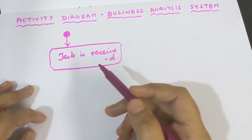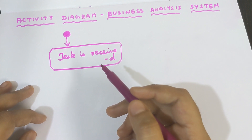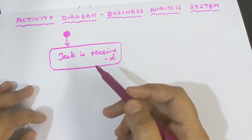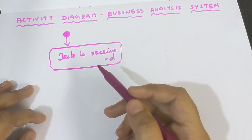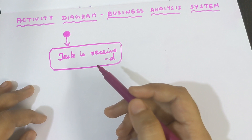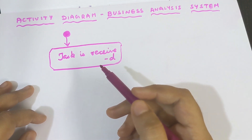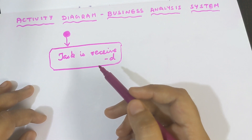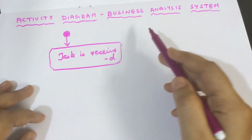Next, the employee completes the task. After completing the task, the employee sends an email to the manager saying the task has been completed and testing can proceed. Next, the manager tests the work done by the employee. If the test is successful, the manager informs the client that the work has been completed. If the test is not successful and there is some error, the manager informs the employee and asks them to recheck, make changes, and send it back. This is the entire process of the business analysis system.